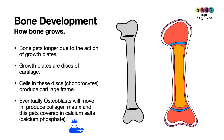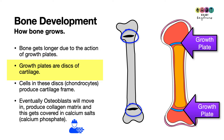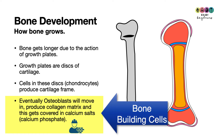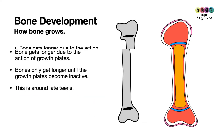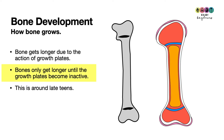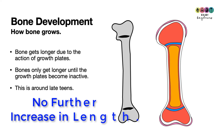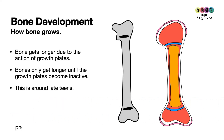How does bone grow in length? It grows due to growth plates, which are discs of cartilage found between the epiphyses and the diaphyses. Cells in the growth plate called chondrocytes produce a cartilage frame, which eventually gets replaced as osteoblasts come in and produce a collagen matrix covered over in calcium salts such as calcium phosphate. These growth plates become inactive usually by the late teens, after which bones will never grow longer.